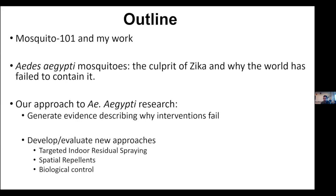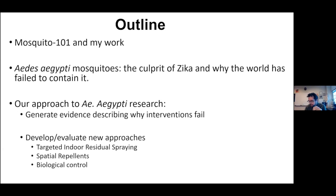I'm happy to take questions at the end, or in the middle if something captures your attention. The idea today is to give you a mosquito 101 — some basics about why they're one of the most evolved species that attacks us and other mammals — then talk about Aedes aegypti, the main vector of Zika, the challenges we have globally to control it, and some methods my group has been developing that are the new frontier of research.